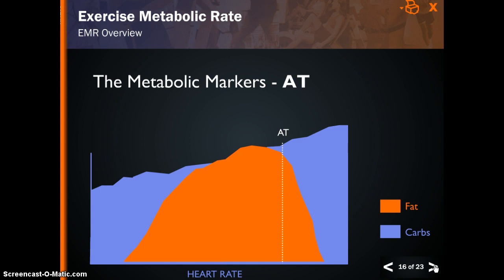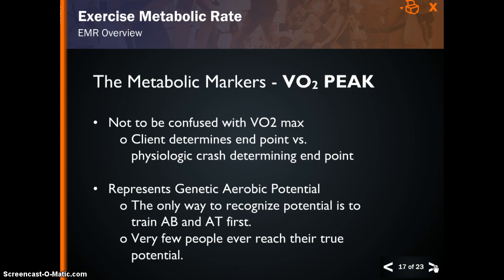By maximizing fat and total sustainable caloric burn rates, the client's weight loss, fitness, and performance goals can be met. The final marker is VO2 peak, not to be confused with VO2 max. In a VO2 peak assessment, the client determines the stopping point of the assessment. For a VO2 max, the client exercises to complete exhaustion or physiological crash to determine the endpoint. It is never desirable or necessary to perform a VO2 max test in a health club setting. A VO2 peak test is generally very close to an individual's max and is more than sufficient to determine their genetic aerobic potential. The only way to achieve their potential is to first train their base and then their threshold. However, very few people ever truly reach their full genetic potential for oxygen uptake.